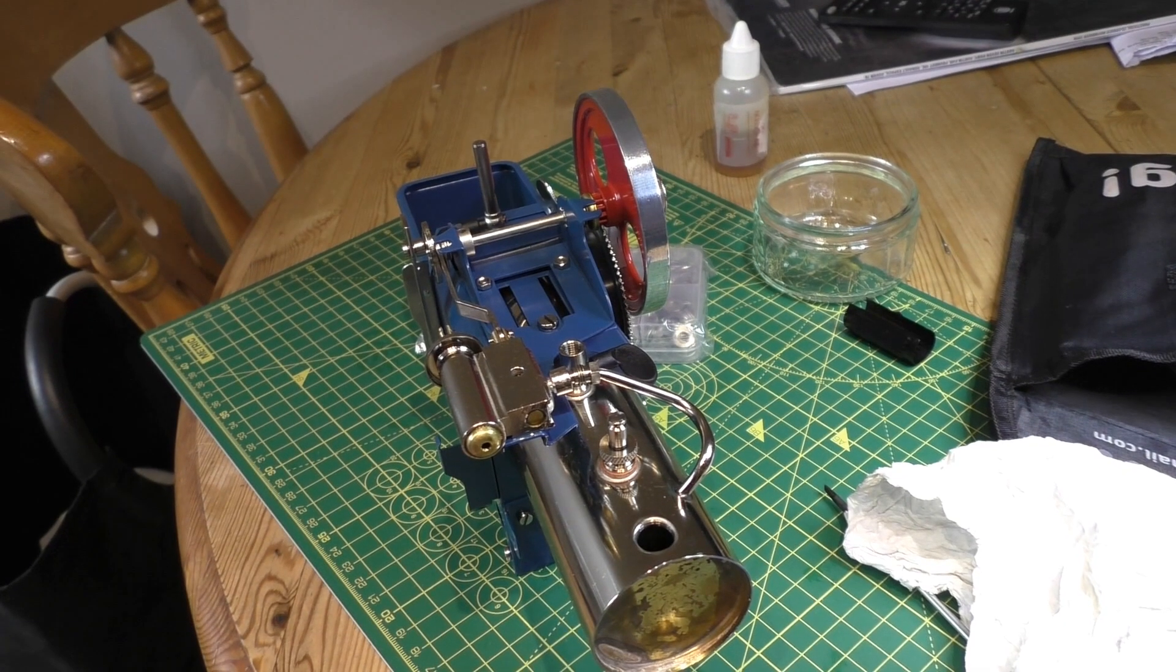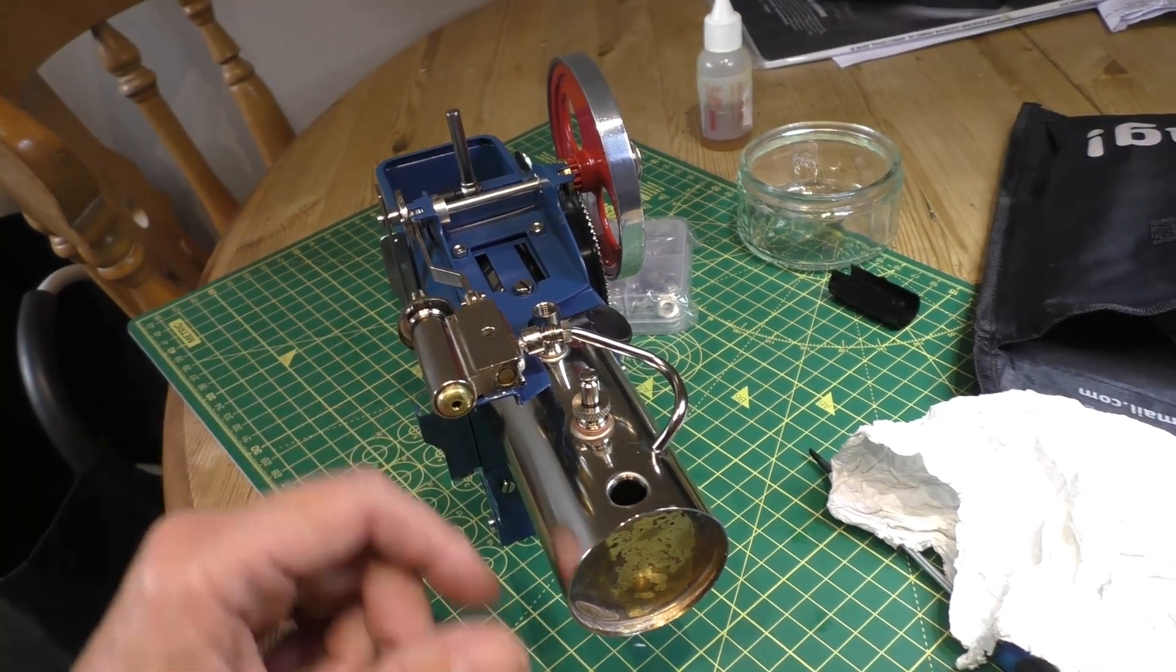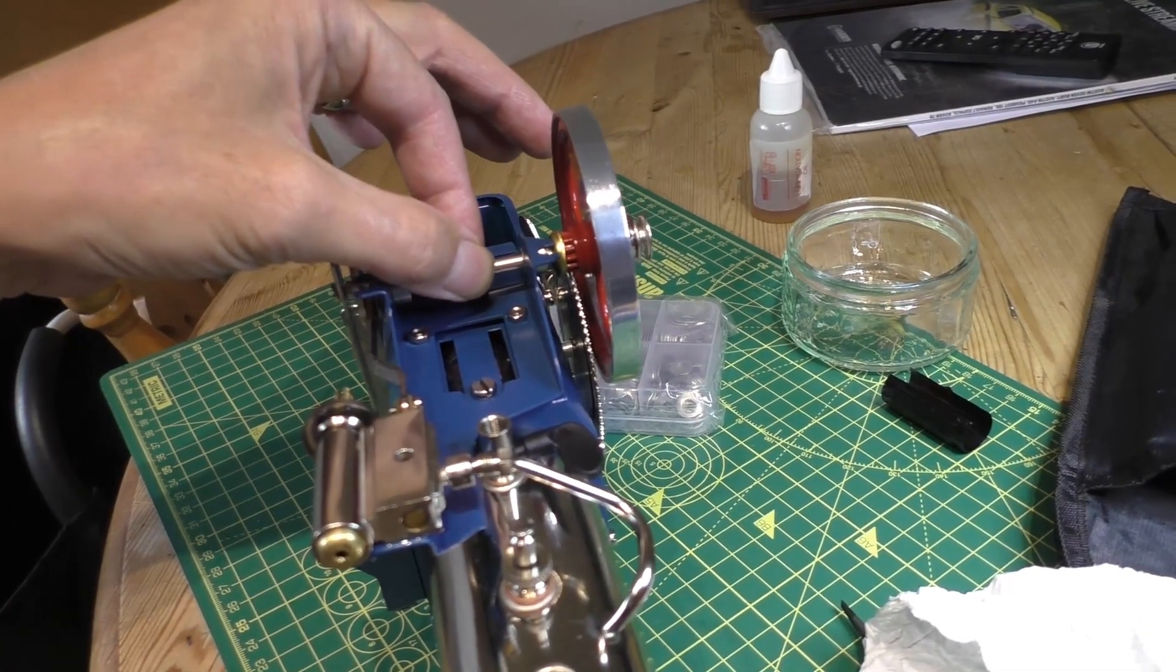Hello and welcome back to Fred in the Shed 2 on this second and final part of this Walesco tractor kit build. Where we left this in part one, I'd assembled the boiler, the flywheel, and the piston.